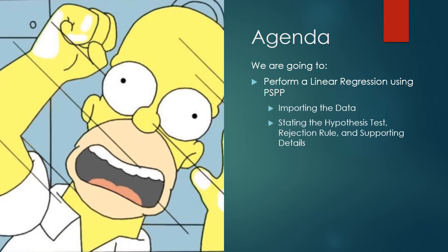First, we will import the data. Then we will state the hypothesis test, the rejection rule, and supporting details. Afterwards, we will actually use PSPP to conduct the regression and examine the output. Last but not least, we'll give the APA presentation of our findings and review the takeaways from this presentation.